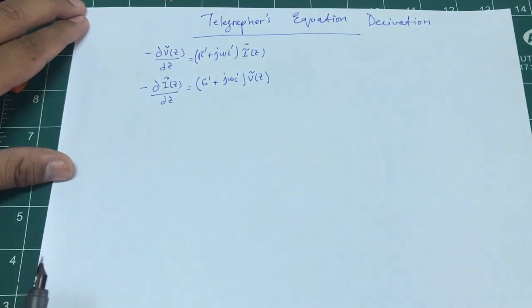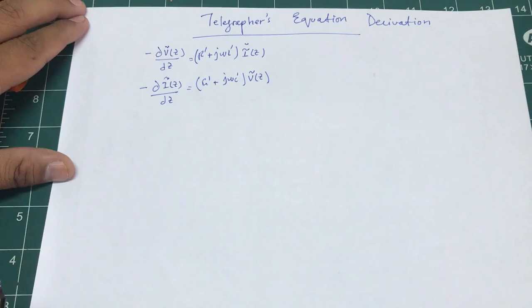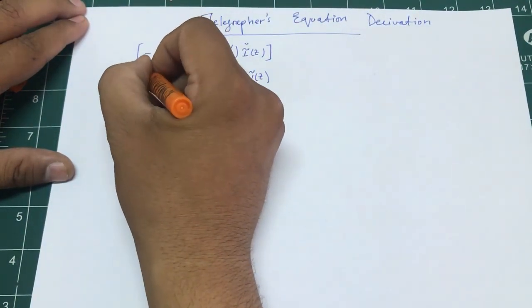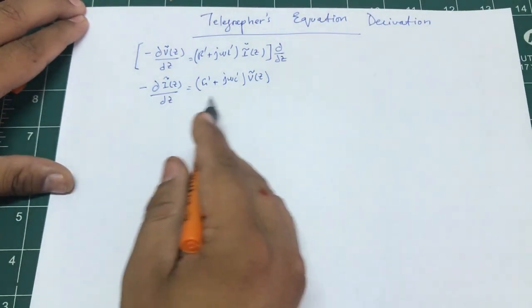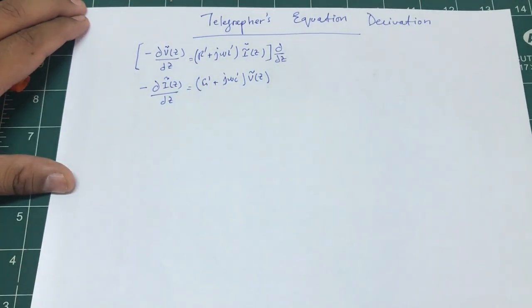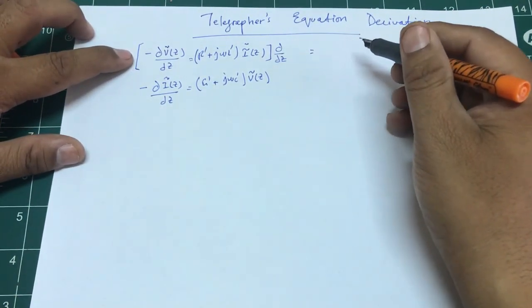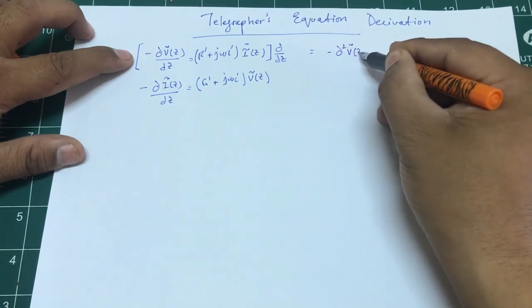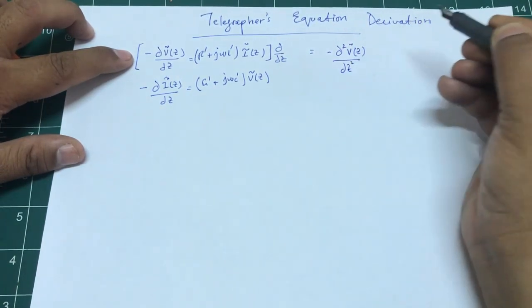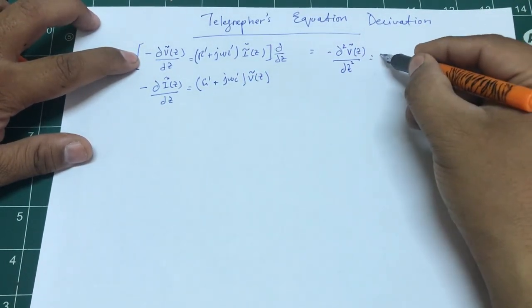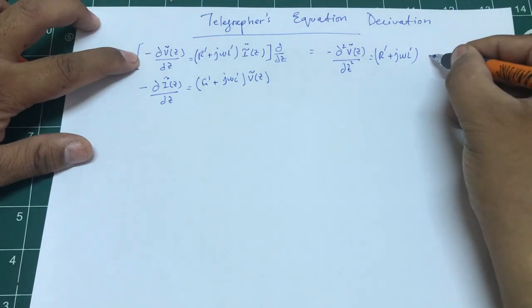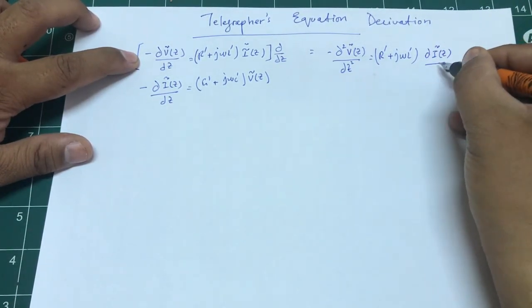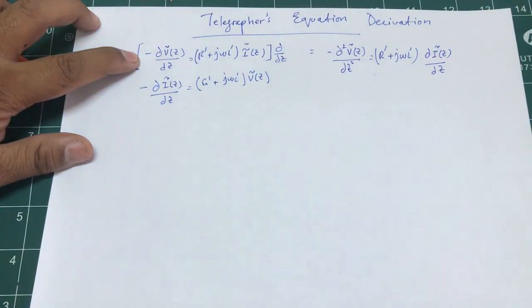Let's manipulate this a little bit more and come up with other forms as well. The first thing I'm going to do is take a derivative over both sides with respect to dz. Once I take a derivative, the first derivative becomes a second derivative of V of z. Taking the derivative of both sides gives R's prime plus j omega L prime times dI of z over dz.